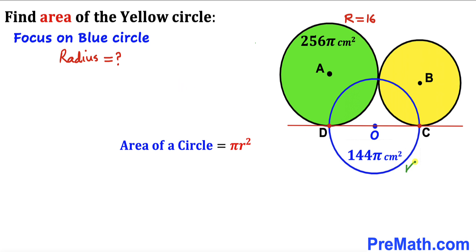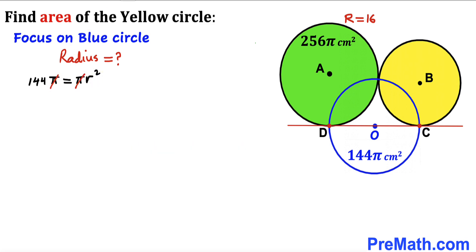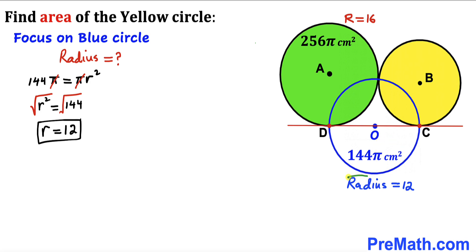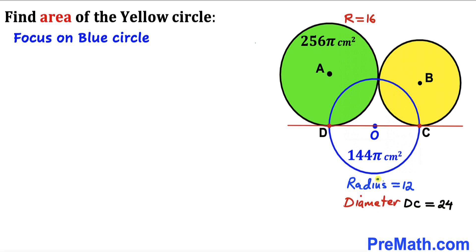Now let's focus on the blue circle and calculate its radius. The area of the blue circle is 144π. Using Area = πr²: 144π = πr². Pi cancels, giving r² = 144. Taking the square root, the radius of the blue circle is 12 cm. Therefore the diameter DC of this blue circle is 2 × 12 = 24 cm.